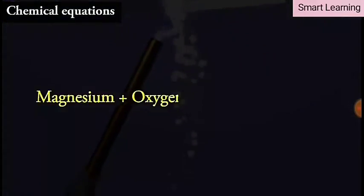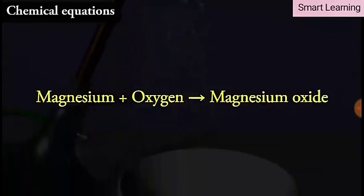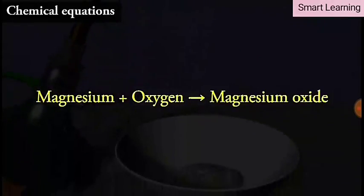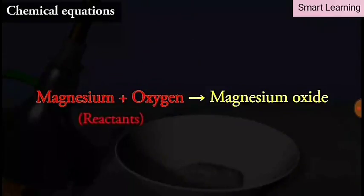The word equation for the above reaction would be: magnesium plus oxygen gives magnesium oxide. The substances that undergo chemical change in the reaction, that is magnesium and oxygen, are the reactants. The new substance magnesium oxide formed during the reaction is the product.